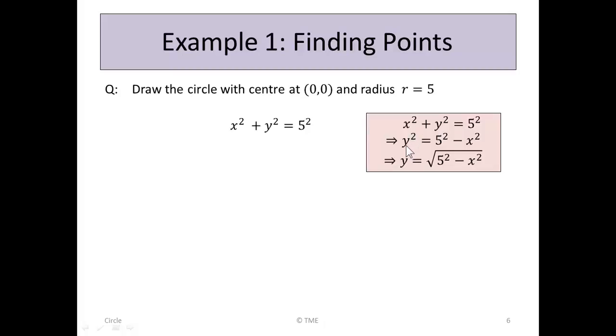For example, if we choose to leave y squared on the left-hand side, we'd take the x squared to the other side. So y squared equals 5 squared minus x squared. And if we wanted a single variable on the left-hand side without the square, we'd just take the square root. So y equals the square root of 5 squared minus x squared. In this way, if we have a value for x that we try, we can find the corresponding value for y.